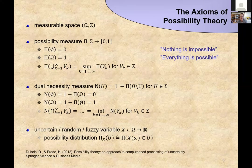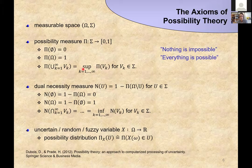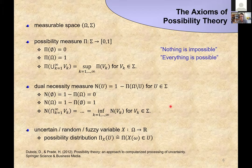A possibility measure is very similar to a probability measure, though not quite the same. We start with a measurable space and introduce a possibility measure, which is a set-valued function just like a probability measure. The key difference is that for unions of sets, instead of summing the individual possibilities you take the supremum. If you replace your sums and integrals by suprema, that is more or less 90% of what you want to do in possibility theory.